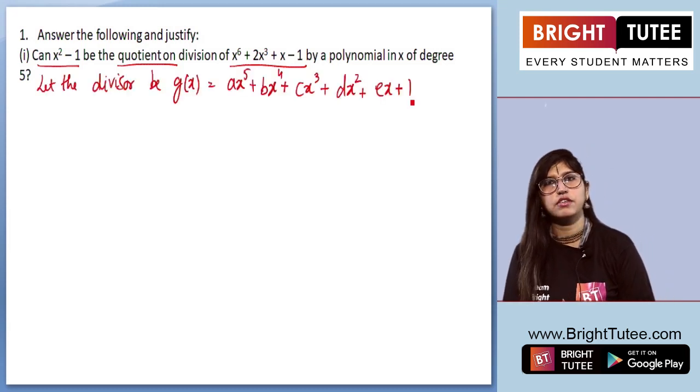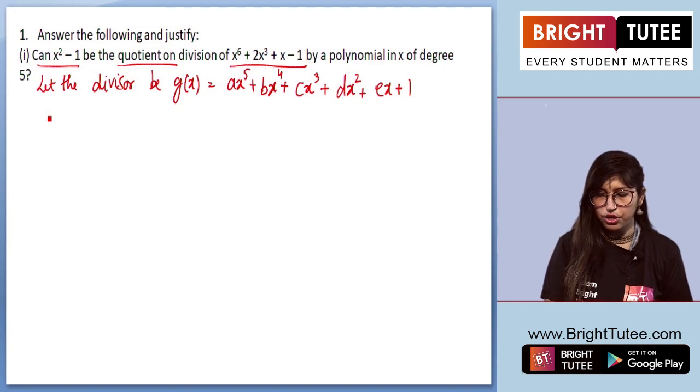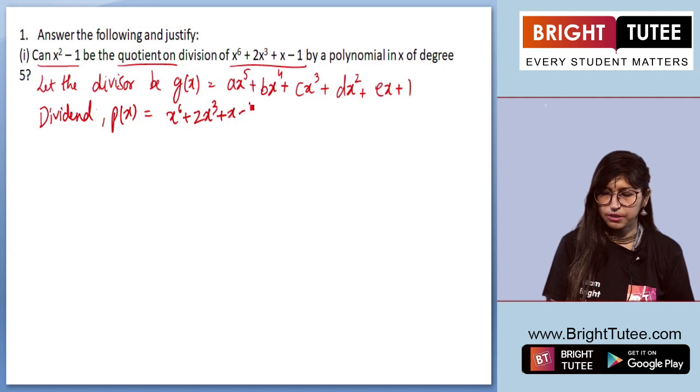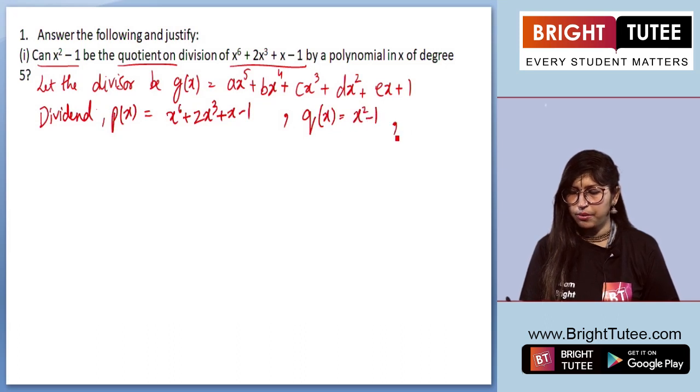This is the divisor of degree 5, and we know that over here the dividend P(x) is x to the power 6 plus 2x cube plus x minus 1. We'll be getting Q(x), that is quotient, which is x square minus 1, and we can take remainder as R(x).